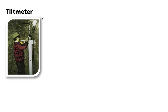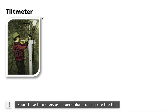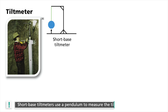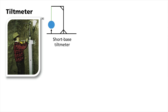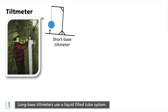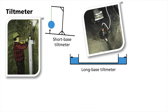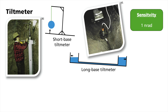A tiltmeter essentially is a horizontal accelerometer and does not differ from a horizontal seismometer in this respect. Short base tiltmeters use a pendulum to measure the tilt — when the instrument is tilted with respect to gravity due to earth's deformation, the pendulum moves and its deflection can be recorded. Another type are long base tiltmeters, which use a liquid-filled tube system. They consist of two identical vertical containers, partially filled with a liquid and connected by a long horizontal tube. The tilt can be detected by measuring the difference of the fluid levels within the containers, and inclinations down to one nano-radian can be measured.